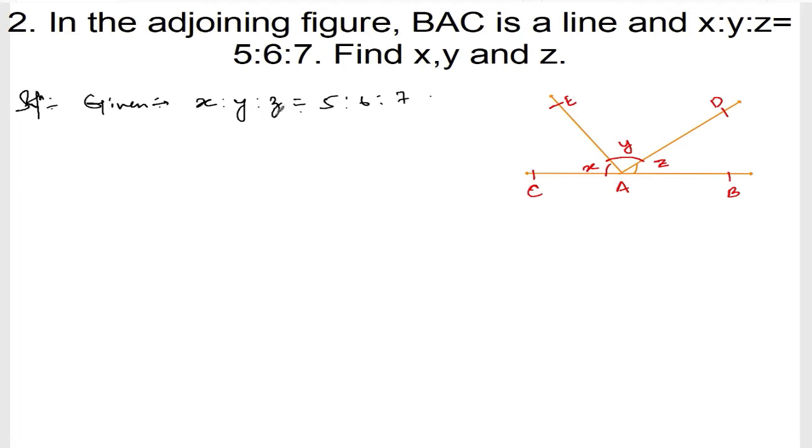Now how can I write this? I can write this as X divided by 5 is to Y divided by 6 is to Z by 7 is equal to k. So I can write this as X is equal to 5k, Y will be equal to 6k, Z will be equal to 7k.